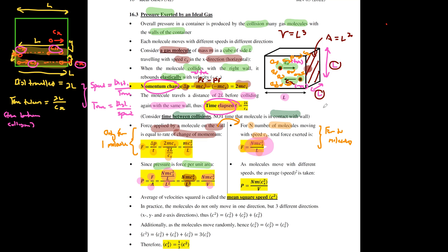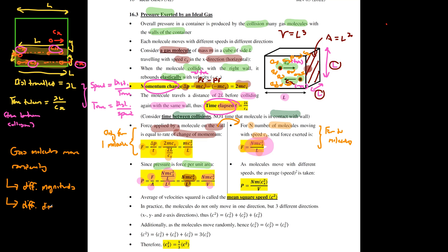Your gas molecules move randomly — they move with different magnitudes as well as different directions. You have already considered N molecules moving horizontally with speed Cx. Taking one step further toward the real-life case: molecules moving in the same direction won't all have the same speed. So take the average, replacing Cx² with the mean square speed ⟨Cx²⟩, giving P = Nm⟨Cx²⟩/V.